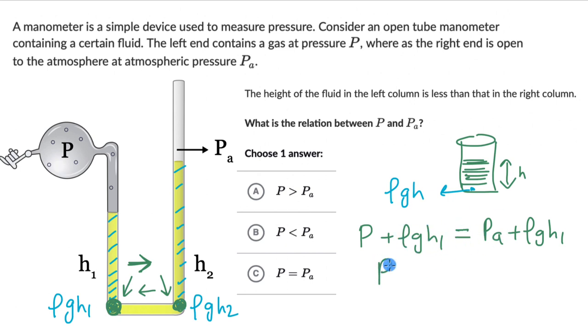Now, we can take PA to the left hand side, this becomes P minus PA, this is equal to ρg, this should be two, Rho gH2, ρgH2 minus H1.